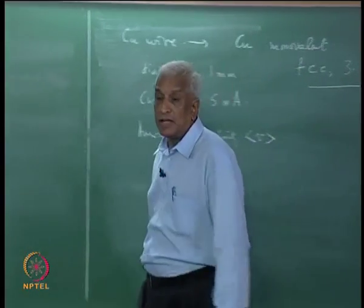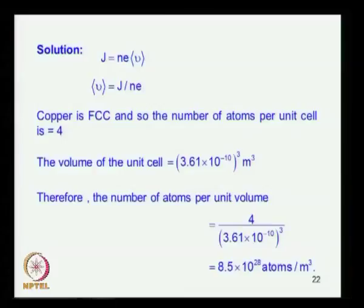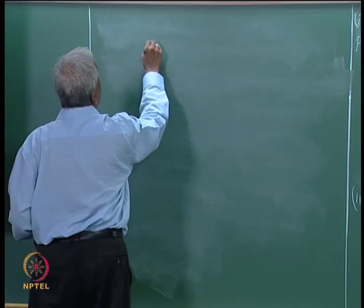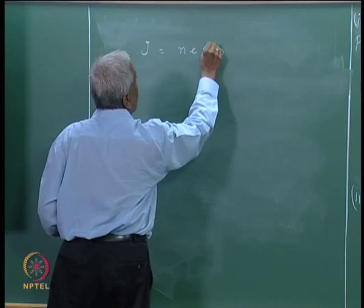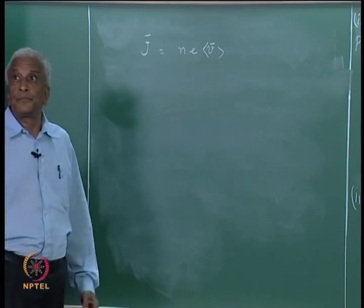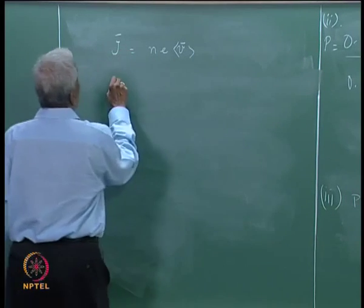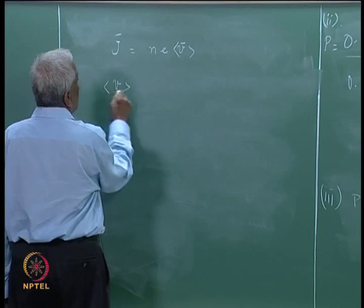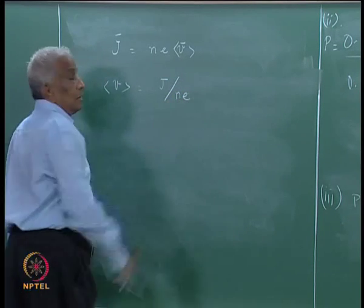So, these are the data given. We know that the current density J is n e v. Therefore, the average drift velocity is just the magnitude of the current density divided by n e.